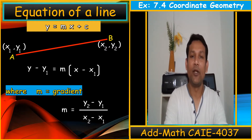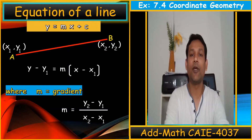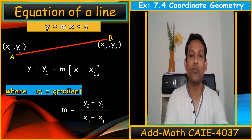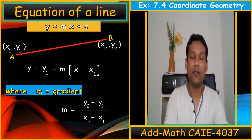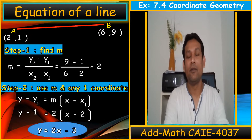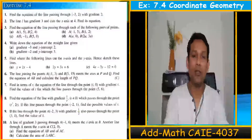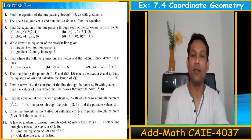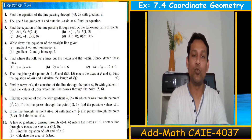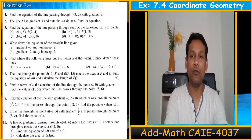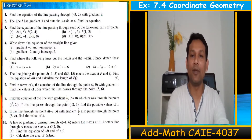Hi everyone, welcome back to my channel Vertex 1.0. Today we are doing exercise 7.4, all the questions. In the previous video I covered how we can use the formula of the straight line in A-level maths. I will try my best to do all the questions from question 1 till 10 and explain in detail, but to understand this video you should watch my previous video that is 7.4 — only the formula and the explanation.